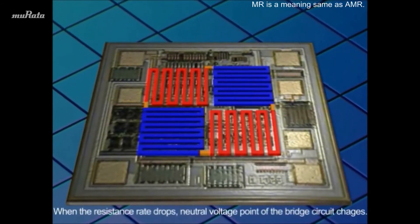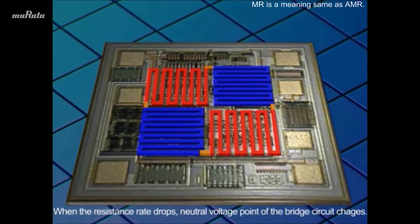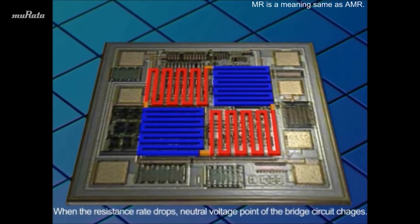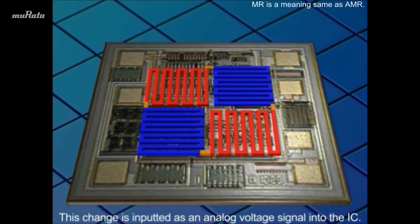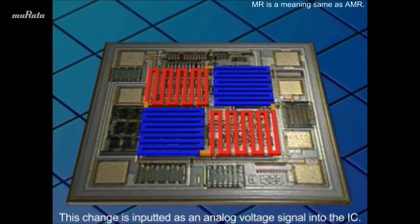When the resistance rate drops, the neutral voltage point of the bridge circuit changes. This change is inputted as an analog voltage signal into the IC.